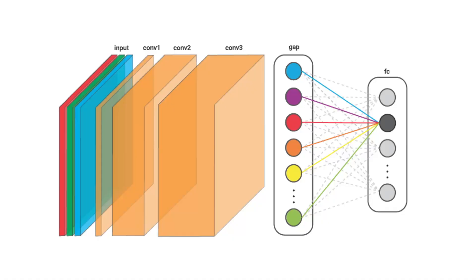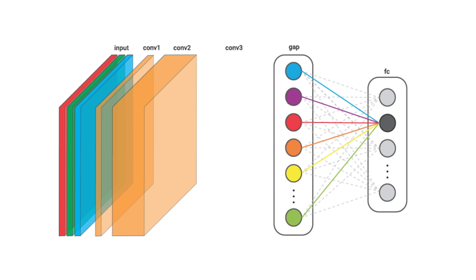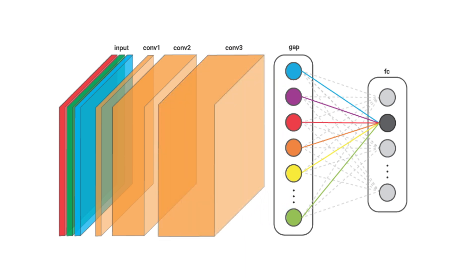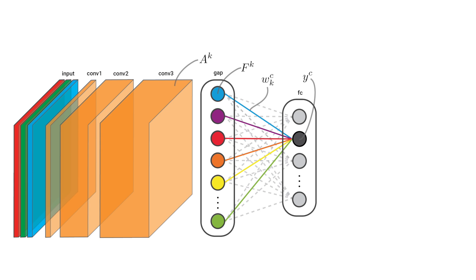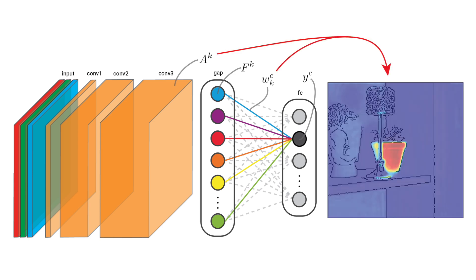Researchers discovered that a network with a specific type of pooling layer called global average pooling were inherently interpretable. By using the weights from this layer, we can understand how the model is making a classification.